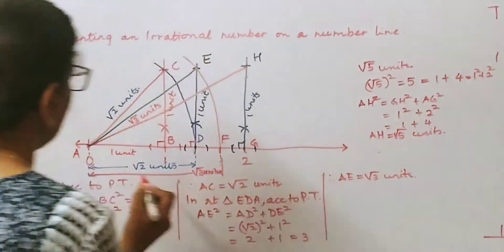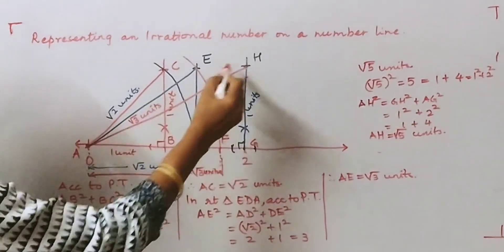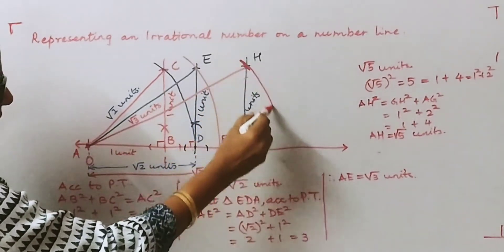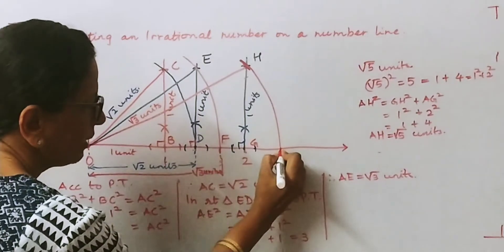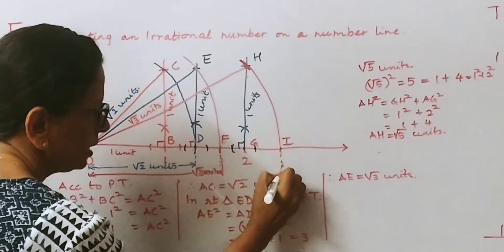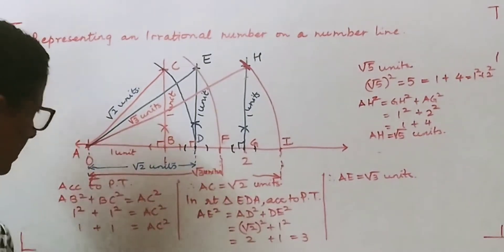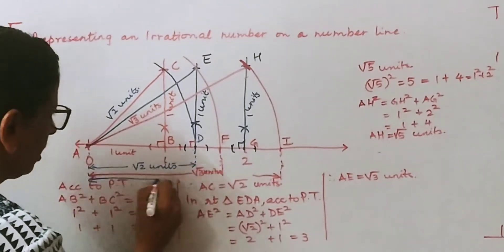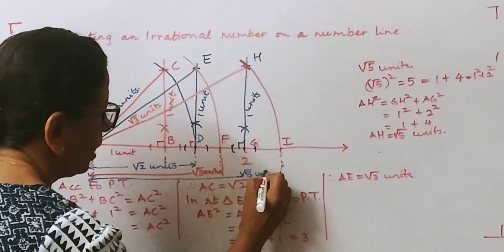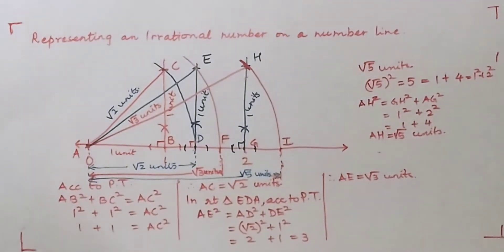Now we take the radius from A to H. Keeping the point of compass at A, we stretch the pencil up to H and draw the arc. Whatever length we get on the number line we mark as point I. So from A to I, this length represents √5 units on the number line. And so on and so forth you can continue the representation of irrational numbers.